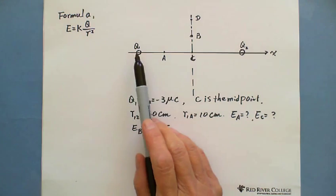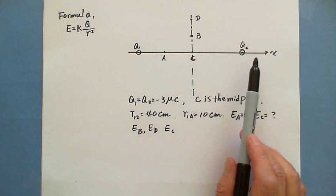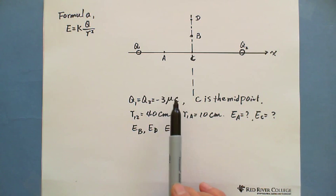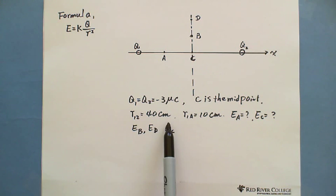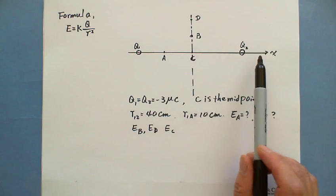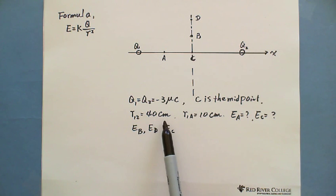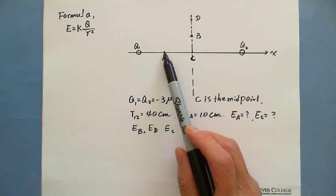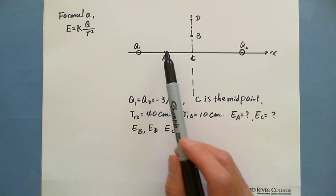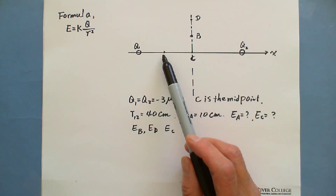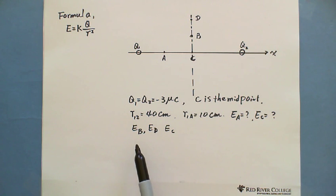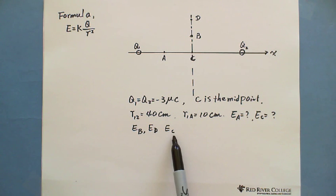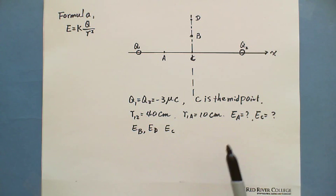There are two charges, both negative, with the same charge of negative 3 microcoulombs. The distance between these two charges is 40 centimeters. Point C is the midpoint of Q1 and Q2, and point A is 10 centimeters from Q1. We are looking for the electric field strength at point A and point C, and also the relationship between EB, ED, and EC.